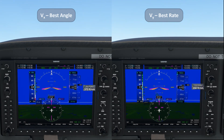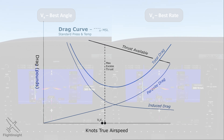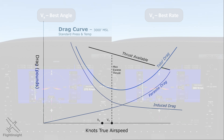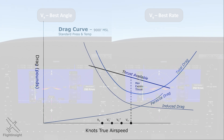Let's look at why. VX is the speed that gives us our max excess thrust — the most amount of thrust available over the thrust required, which is a product of drag. In higher, thinner air, thrust available decreases, but so does drag. This pushes our VX speed, where we have max excess thrust, higher. We have to push more air at faster speeds to generate excess thrust.